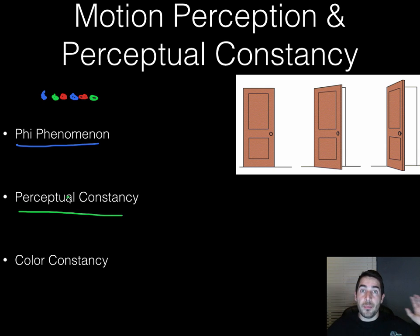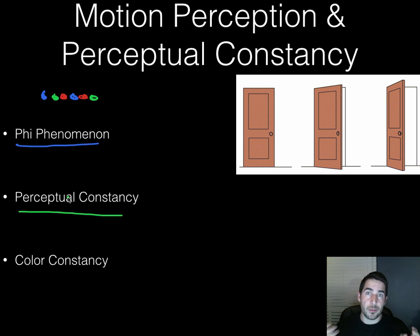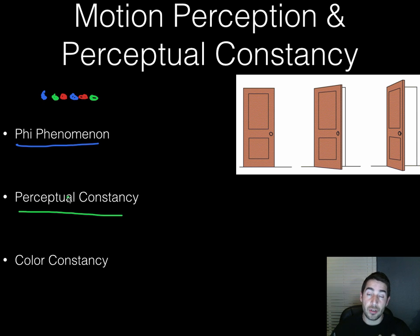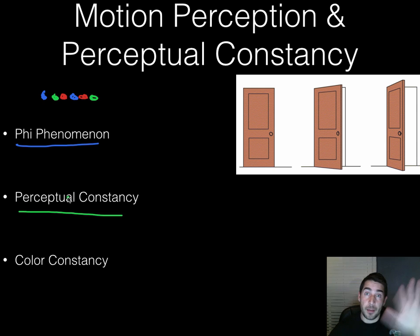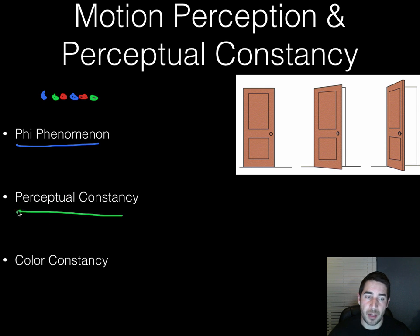Perceptual constancy is a really interesting thing our brain does. It allows us to maintain our idea of what something is supposed to be. Maybe we're looking at something that's red, and the light changes — we go from a bright room to a dark room — but we know it's supposed to be red, like a Valentine's heart, so we're still going to perceive it as red. That's called top-down processing — using previous knowledge to help us perceive what something is. Perceptual constancy is big-time top-down processing.